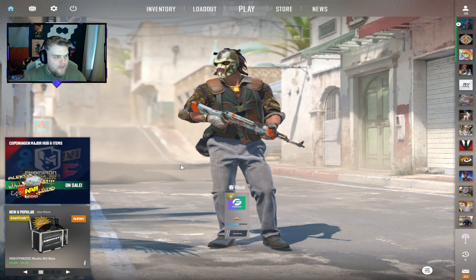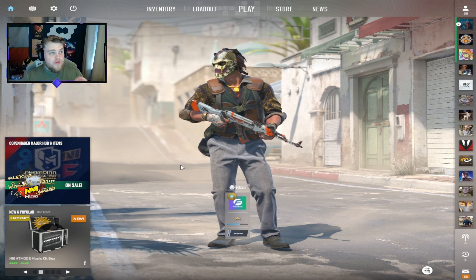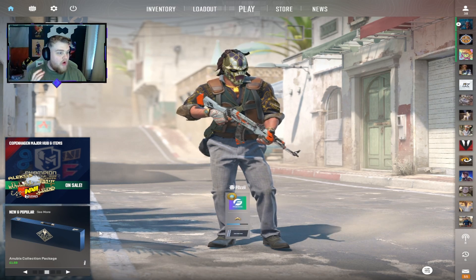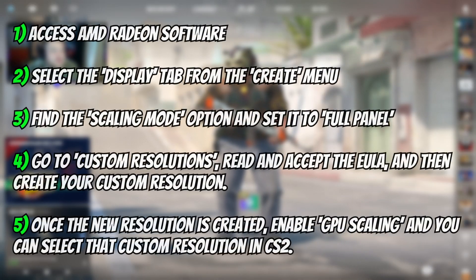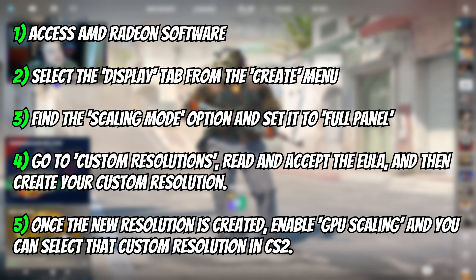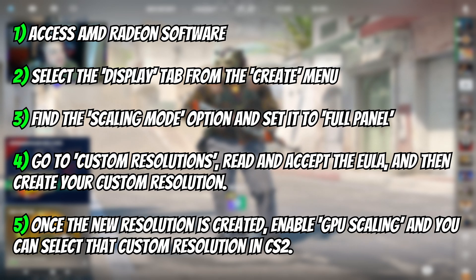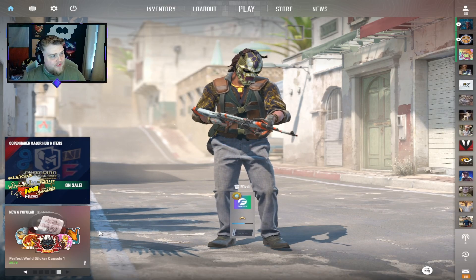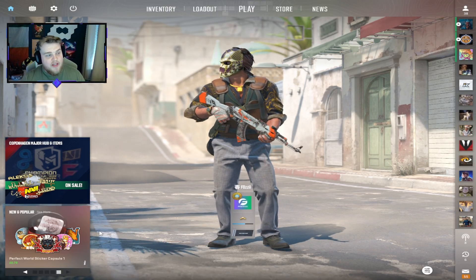If you're on AMD and want to know how to play stretch resolution, I'll have a link below for a full guide, but here are the bullet points. First, access the AMD Radeon software. Then select the display tab within the create menu. Find the scaling mode option and set it to 'Full Panel'. Then go to custom resolutions, read and accept the EULA, and create your custom resolution. Finally, enable GPU scaling, and then you can select that custom resolution in CS2.